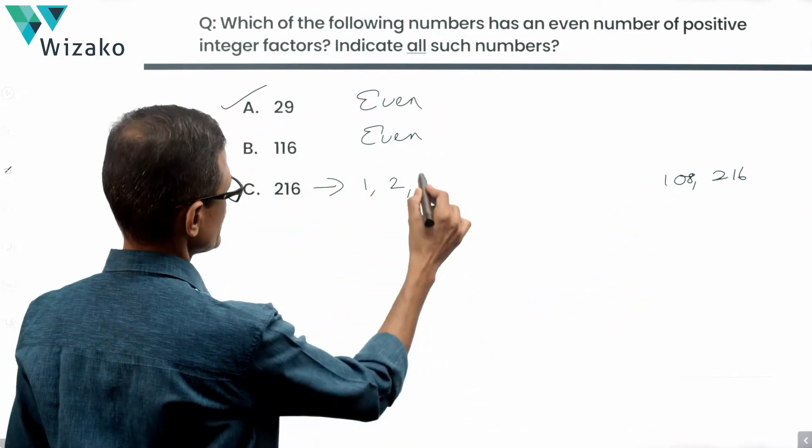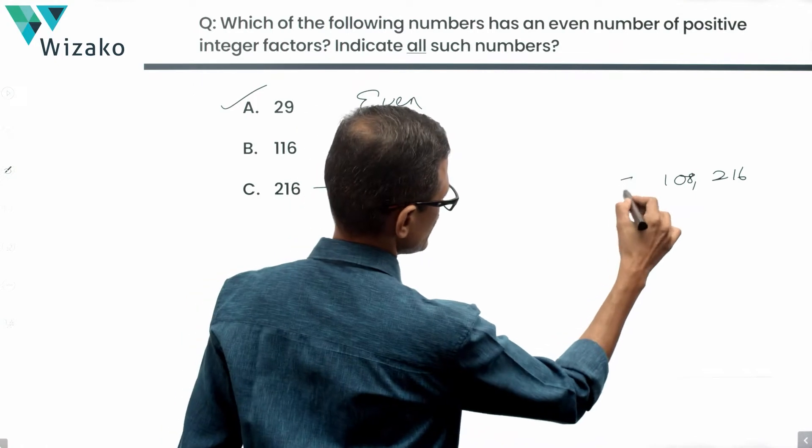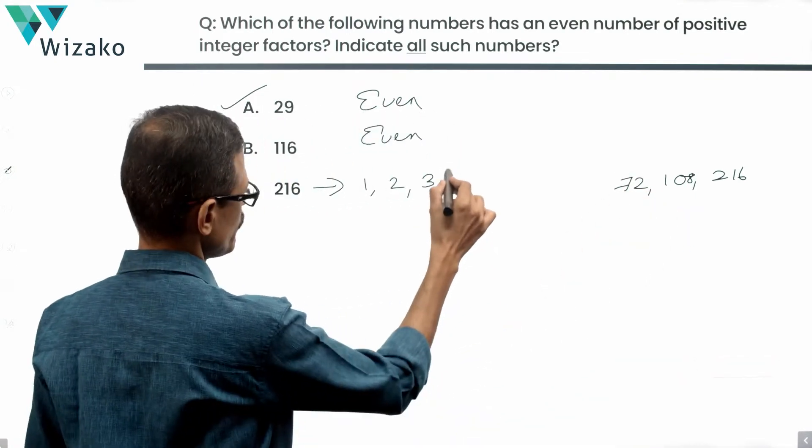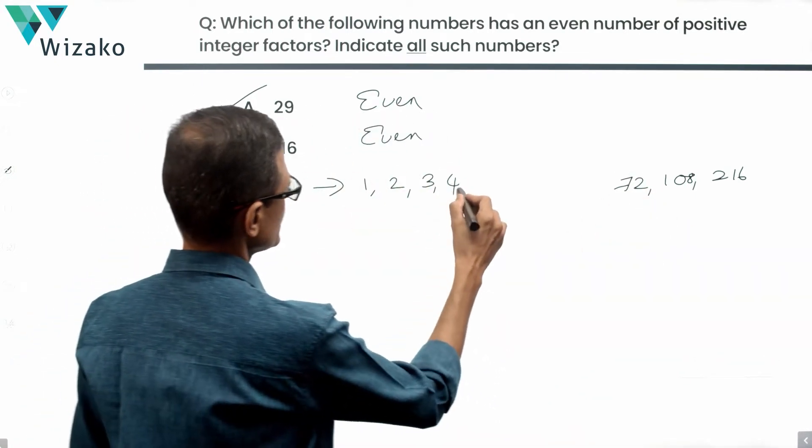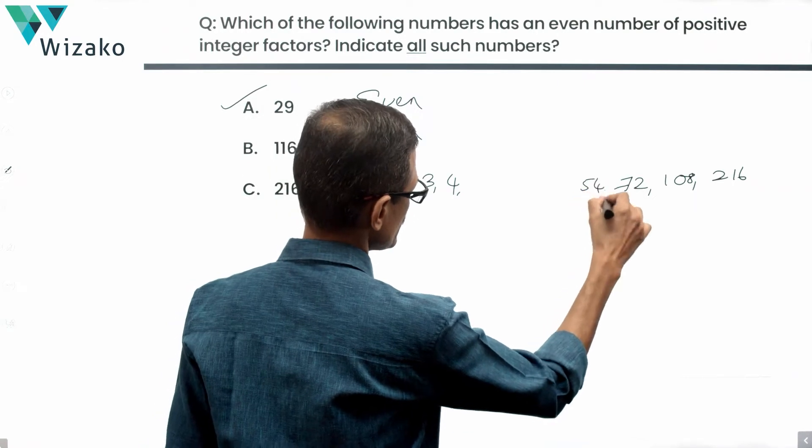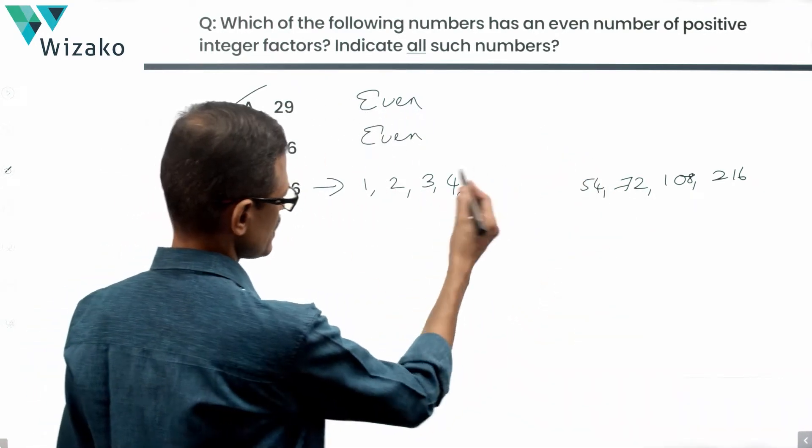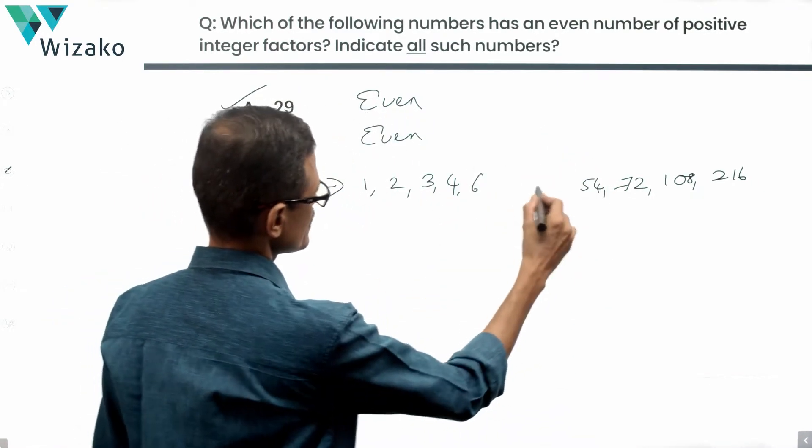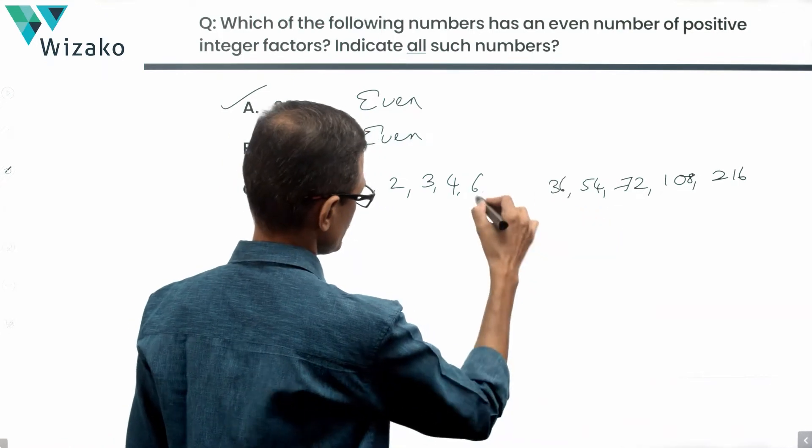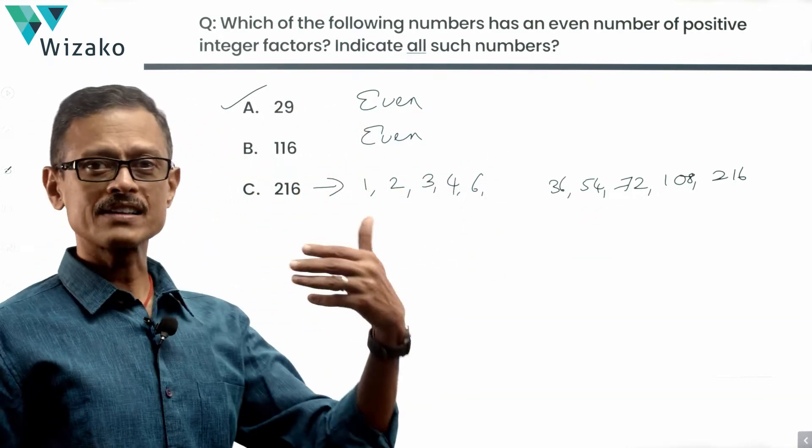Will 3 divide this number? Yes, 3 is a factor of this number. Correspondingly, you'll have 72. Will 4 divide this number? Yes, the answer correspondingly is going to be equal to 54. Will 5 divide this number? No. 6 will divide. 6 times 36 is what we have. We've already written 10 factors and we're still counting.